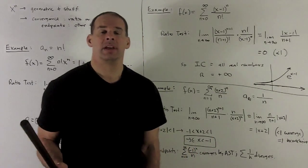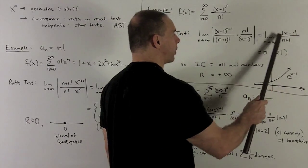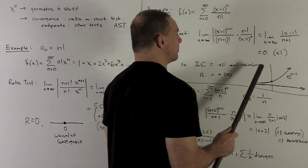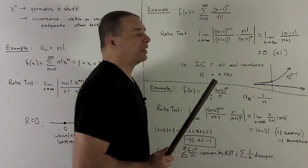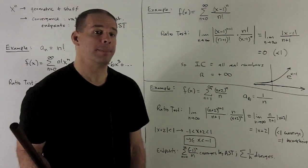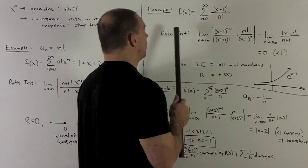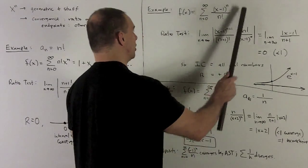If I take the limit, it doesn't matter what I have for x minus one. This is just a number. The n plus one in the bottom is always going to drive me down to zero. That's always going to be less than one, strictly. So we're going to have that the domain for this function is going to be everything. Our interval of convergence is all real numbers.